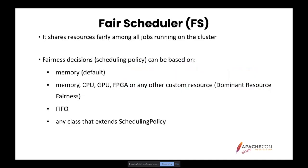FAIR Scheduling is a method of assigning resources so that all applications get an equal share of resources over time. By default, FAIR Scheduler bases scheduling fairness decisions on memory, but it can be configured to schedule with memory and CPU, GPU, FPGA, or any other custom resource using something called Dominant Resource Fairness. Dominant Resource Fairness provides fairness decisions based on multi-dimensional resource vectors.